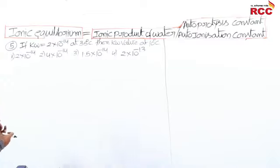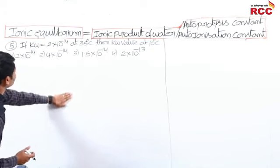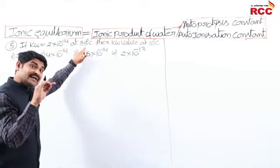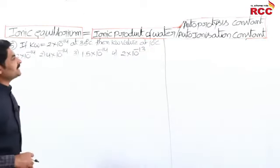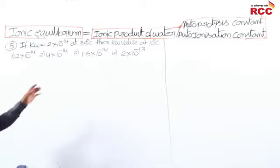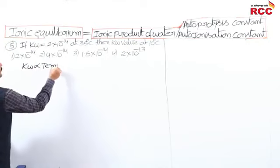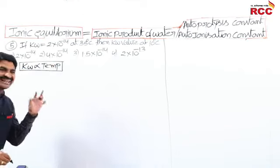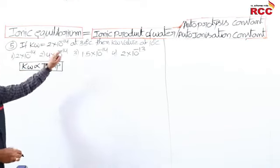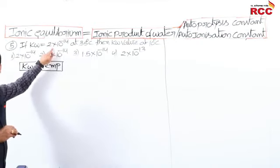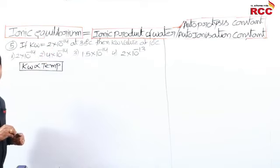For example, at 35°C, Kw = 2×10⁻¹⁴. What is the value at 10°C? Since Kw depends on temperature — as temperature decreases, Kw decreases — the value at 10°C must be less than 2×10⁻¹⁴. No calculation is needed; just observe the relationship.